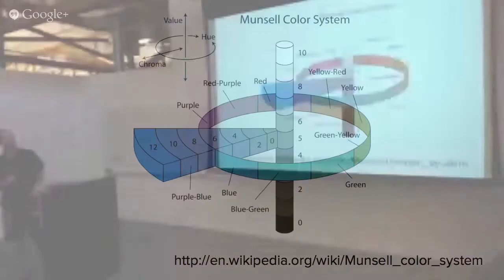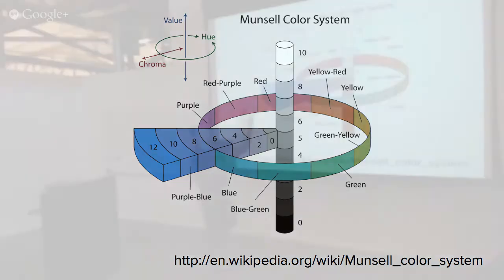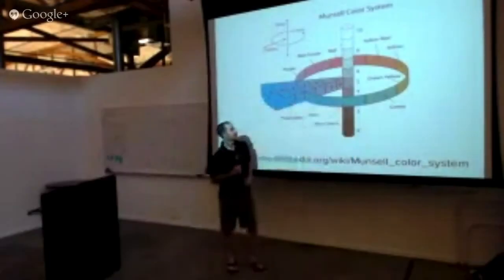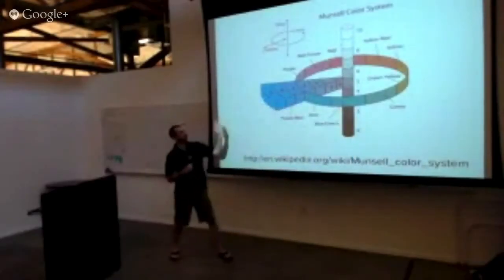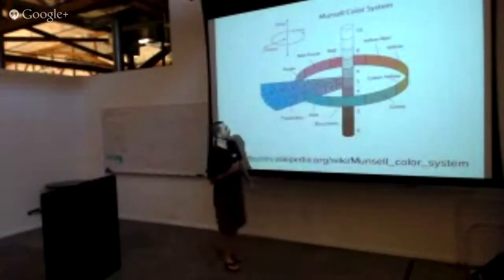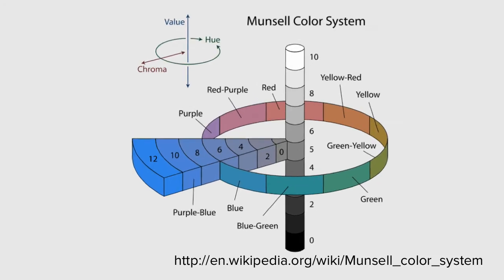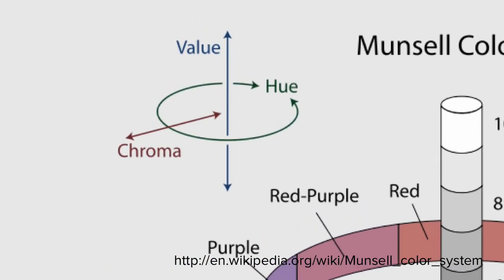Munsell came up with a lot of ideas. Remember that ball we had, where whites are at the top, blacks at the bottom, hue running around the outside? As you go through these slices — the slices of the blue-purple pizza — you go from maximum saturation out here to minimum in the middle. That's called chroma. So you have value — light and dark — chroma in and out, and then hue running around the circle.